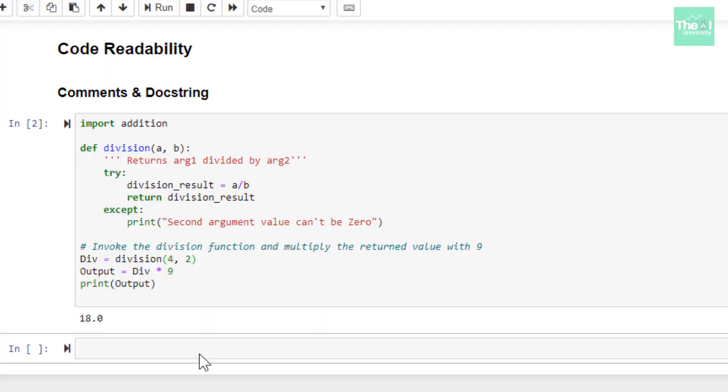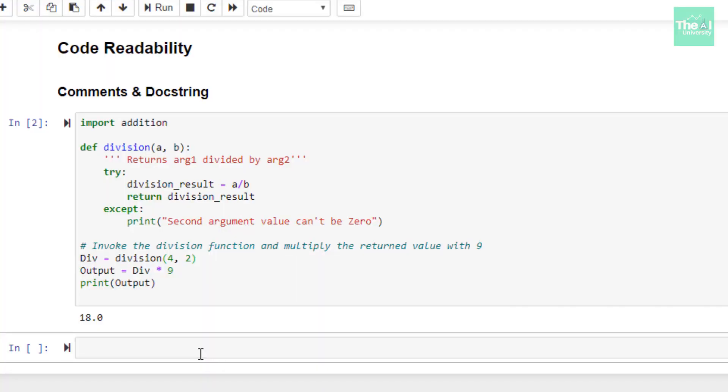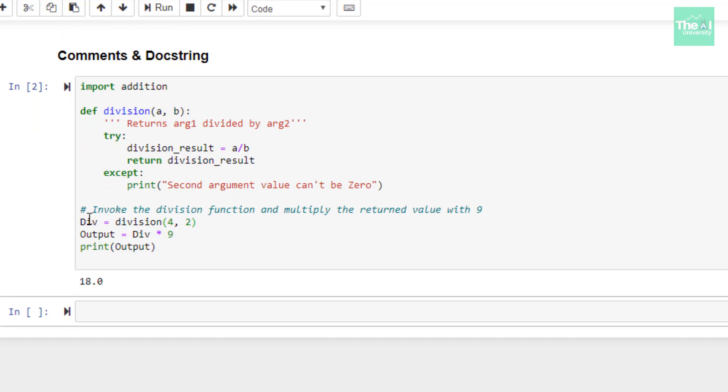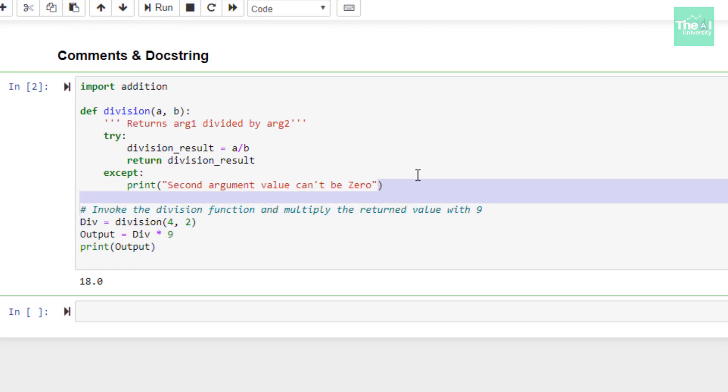So if you see here I have included the comment above the code snippet shown here. As you can see this is the comment and it says invoke the division function and multiply the result with nine. So this way you can explain complex logic. This is pretty much straightforward and simple but if there is some complex logic involved then you can explain that complex logic using these comments pertaining to any particular code snippet.